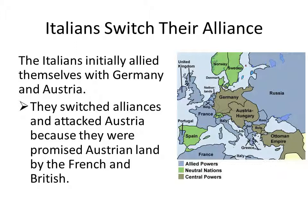Let's talk about the Italians, because they are classically interested in what is going to benefit them the most. They initially allied themselves with Germany and Austria, but then they switched alliances and attacked Austria because they were promised Austrian land by the French and the British. So Italy literally decided to work with Britain, France, and Russia because they were hoping to get some of Austria-Hungary's territory.